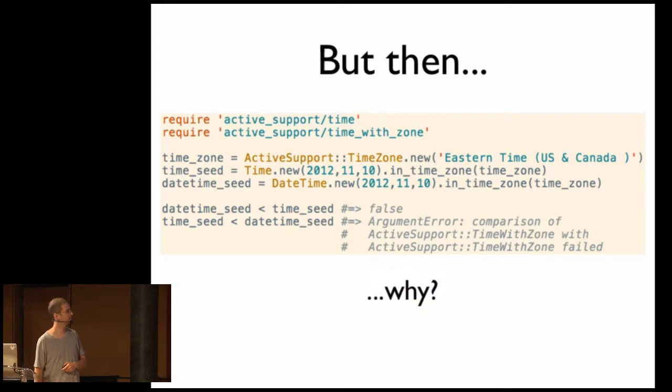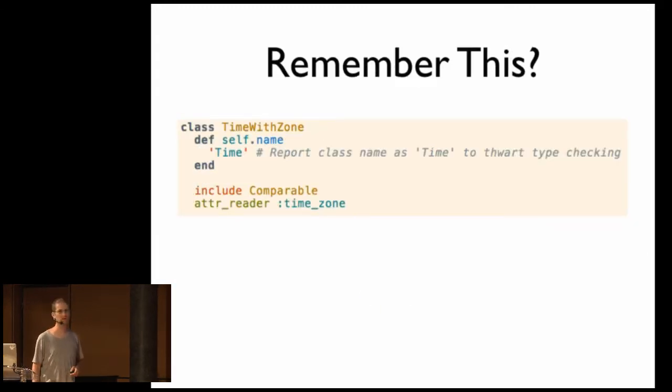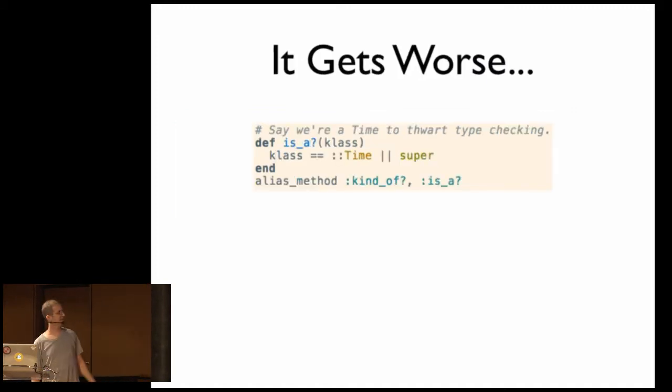Remember when we were looking at the definition of time with zone, I passed over this little bit at the top here where it says self-name. We're going to pretend we're a time, right? To thwart type checking. Because who doesn't like thwarting type checking, right? Gets worse. Turns out that active support time with zone also defines is-a. So that if you ask an active support time with zone object if it is a time, it's going to lie to you and say that it is. Wonderful.